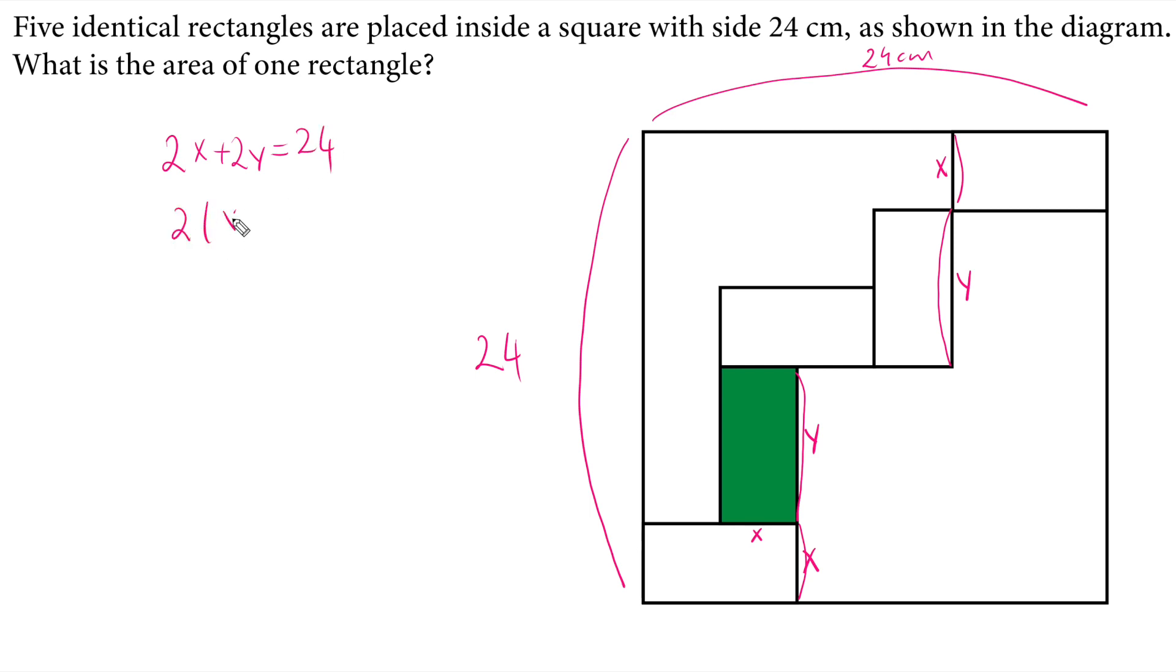In parentheses, 2 times x plus y equals 24. And we divide each side by 2. And we will find x plus y equals 12. So this is our first equation.